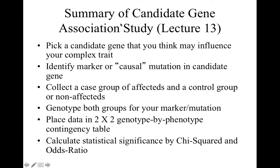In summary, a candidate gene association study involves: picking a candidate gene that may influence your complex trait; identifying a marker or causal mutation in that gene; collecting a case group of affecteds and a control group of non-affecteds; genotyping both groups for your marker or mutation; placing that data in a 2x2 genotype-by-phenotype contingency table; and using the Excel spreadsheet to calculate the chi-squared test for statistical significance and the odds ratio.